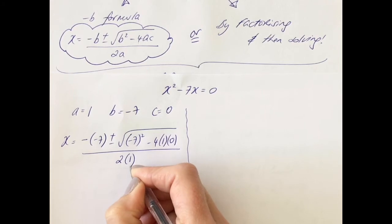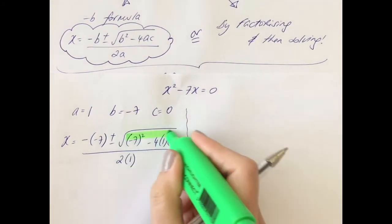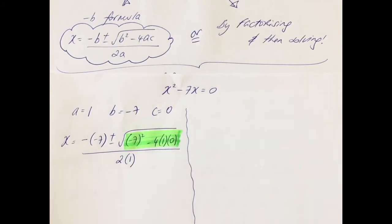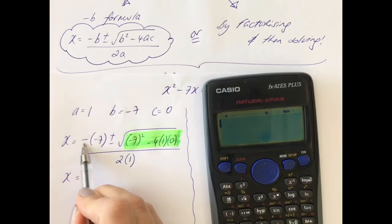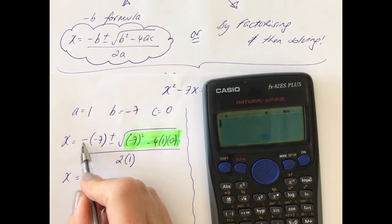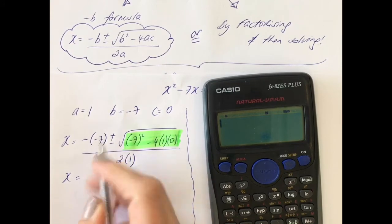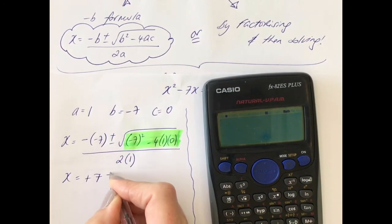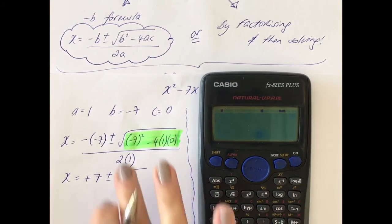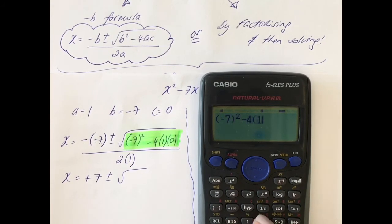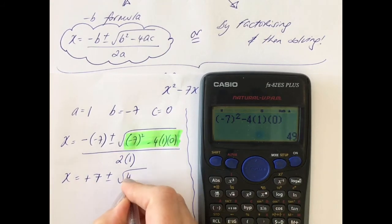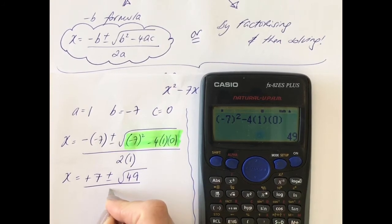So as before we're going to do this bit in the root first on the calculator. We have x is equal to minus minus seven. Remember, minus taking away a negative is like adding, so that's the same as adding seven, plus or minus the square root of... and now in the root what's highlighted green I'm going to put on the calculator. So bracket minus seven, close the bracket squared, minus four bracket one bracket, and open the bracket again, zero, equals, and the answer is 49, all over two times one is two.